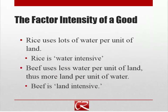Let's think about two different concepts. The first is the factor intensity of a good — I'll use rice and beef as examples. Rice uses a lot of water per unit of land; you grow rice in flooded fields, so rice is water intensive. Beef uses less water per unit of land, which also means more land per unit of water, so beef is land intensive. Each of the two goods uses a different mix of water versus land, and that defines which one intensively uses water and which one intensively uses land.